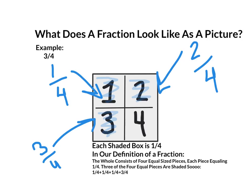In our definition of a fraction, the whole consists of 4 equal sized pieces, each piece equaling 1 fourth. And in the picture, 3 of the 4 equal pieces are shaded. So, 1 fourth plus 1 fourth plus 1 fourth equals 3 fourths, because remember, when you're adding fractions, you only add the numerators, not the denominators.